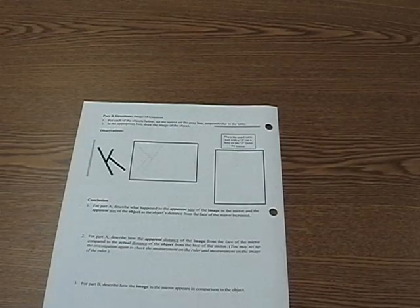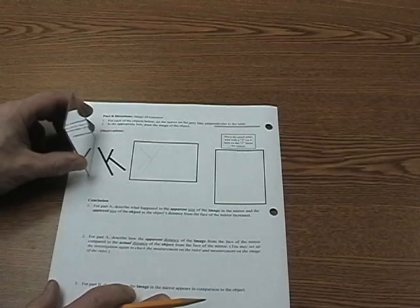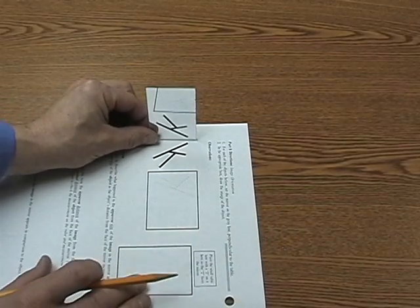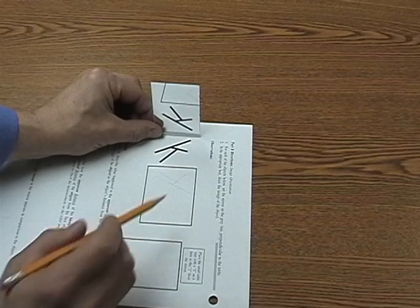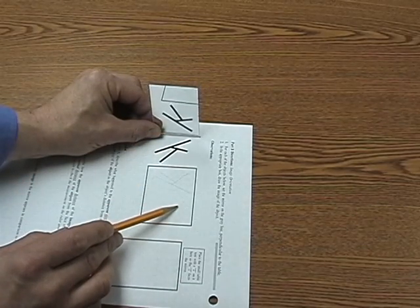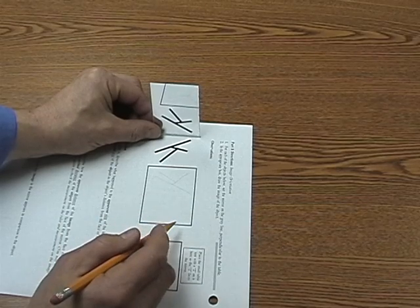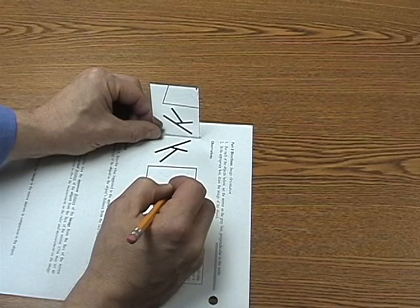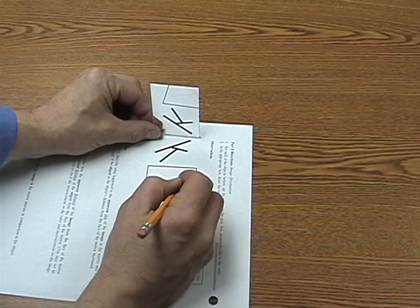For this activity, have the students place the mirror on the line. They may want to turn it to the side so they can see it. Then once they place it there, then they draw the image they see, they draw in the block here. They want to make it as close as they can to what they actually observe in their image in the mirror.